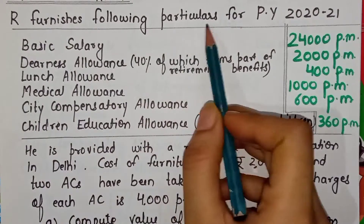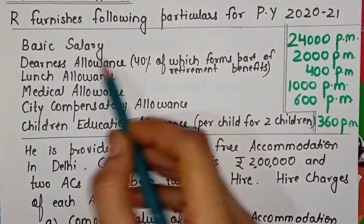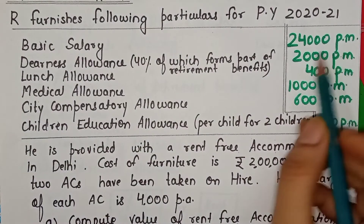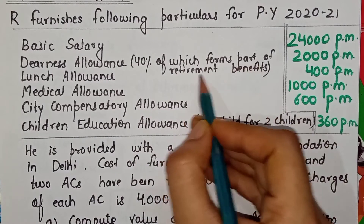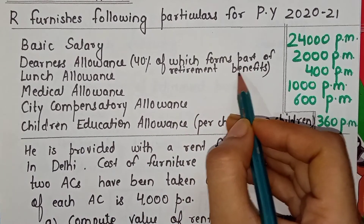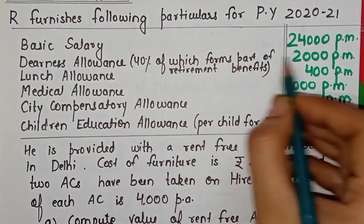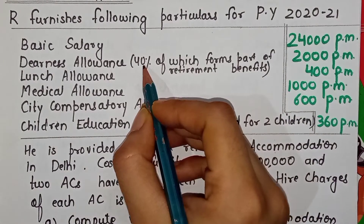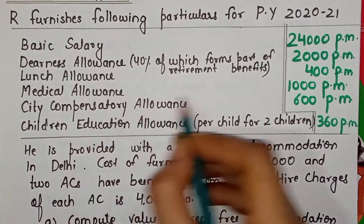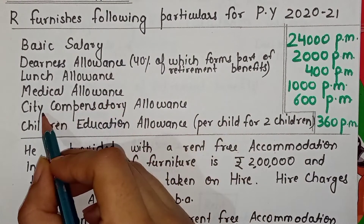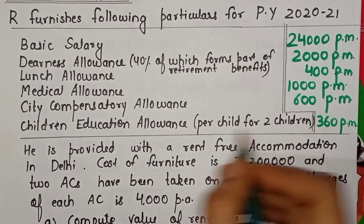Are furnishes following particulars for previous year 2020-21: Basic salary 24,000 per month. DA 2,000 per month but only 40% forms part of retirement benefits. Lunch allowance 400 per month. Medical allowance 1,000 per month — these are fully taxable allowances. City compensatory allowance 600 per month — this is also a fully taxable allowance.